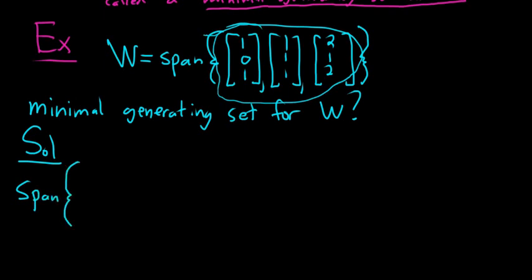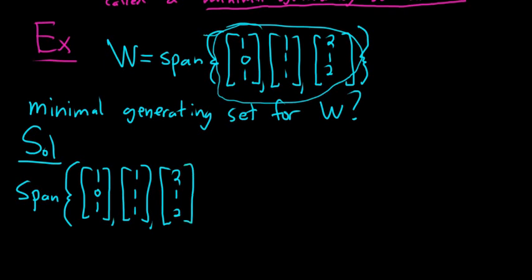So our span, the span of the set: (1, 0, 1), and then (1, 1, 1), and then (2, 1, 2). And I guess we can clean stuff up here.